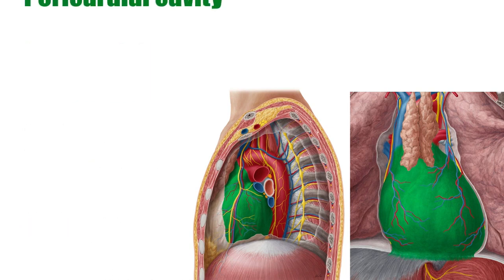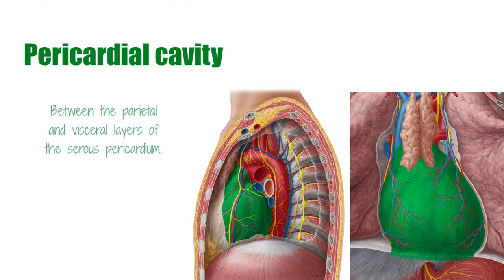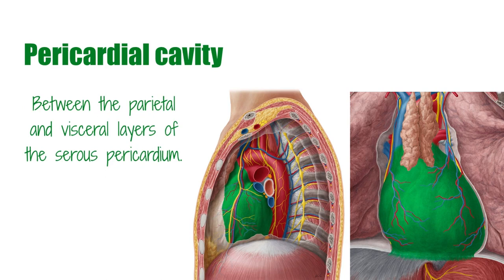The pericardial cavity is the potential space created by the pericardial reflection, between the parietal and visceral layers of the serous pericardium, and this is where the thin film of pericardial fluid is kept, allowing for the two surfaces to be lubricated and rub against one another without any friction.